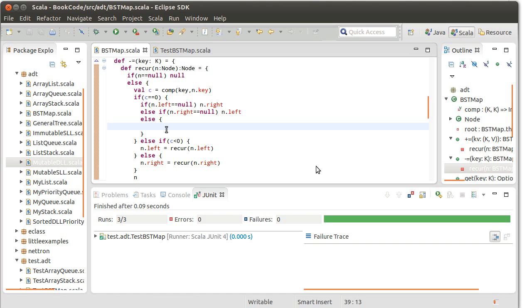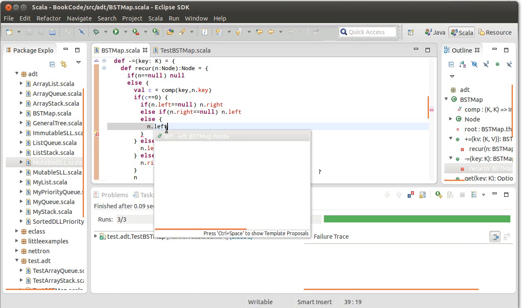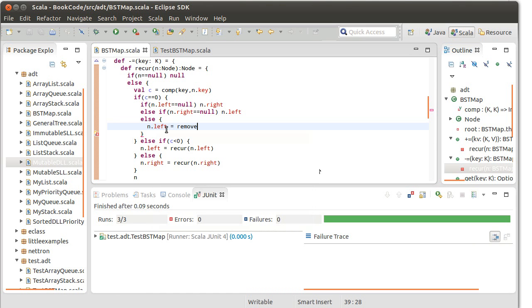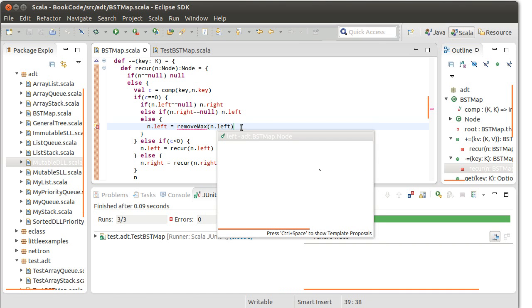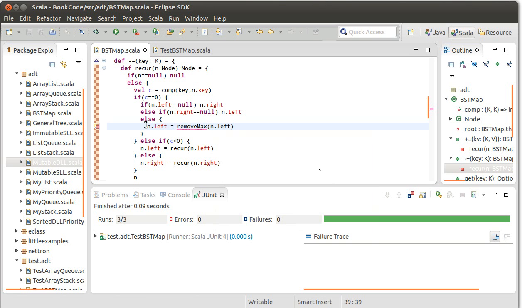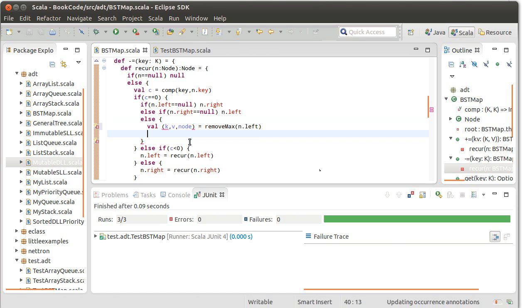So in this case, I am going to set in dot left equal to remove max of in dot left. So in is our victim, which I haven't written this yet. And actually this can't be written quite this simply. Val K, V, node. N dot left equals node. N dot key equals K. N dot value equals V.